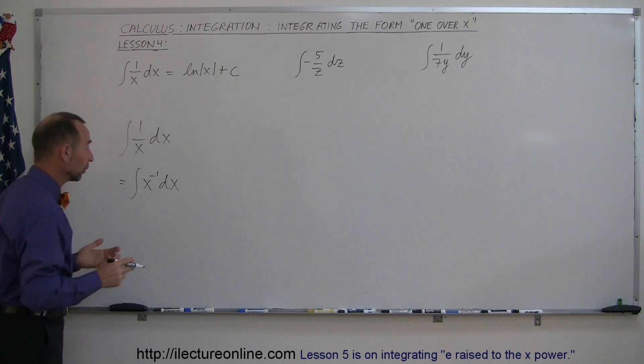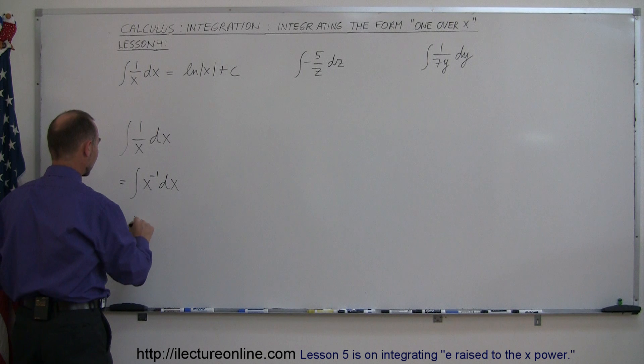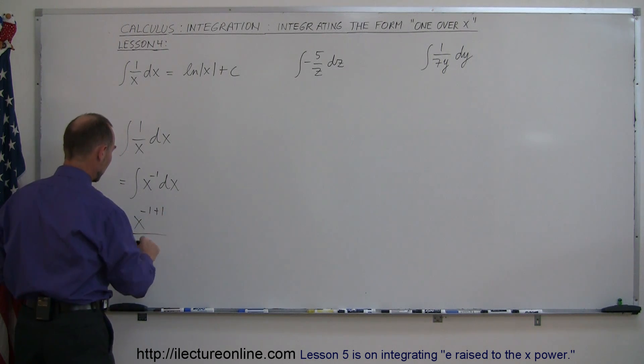And if I use the normal power rule, we're going to add one exponent, divide by the new exponent. So you say, well, this is equal to x to the minus 1 plus 1 over the new exponent, minus 1 plus 1 plus c.